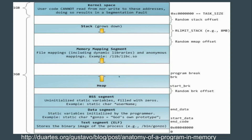The next thing we see in the address space is the heap. The heap is where we draw dynamically allocated memory from. For example, if you call malloc and allocate some number of bytes to a dynamically generated string, those bytes — those memory addresses you've been given — all live in the heap. The heap is kind of opposite of the stack in that the low memory address is the bottom of the heap, and it grows upwards.